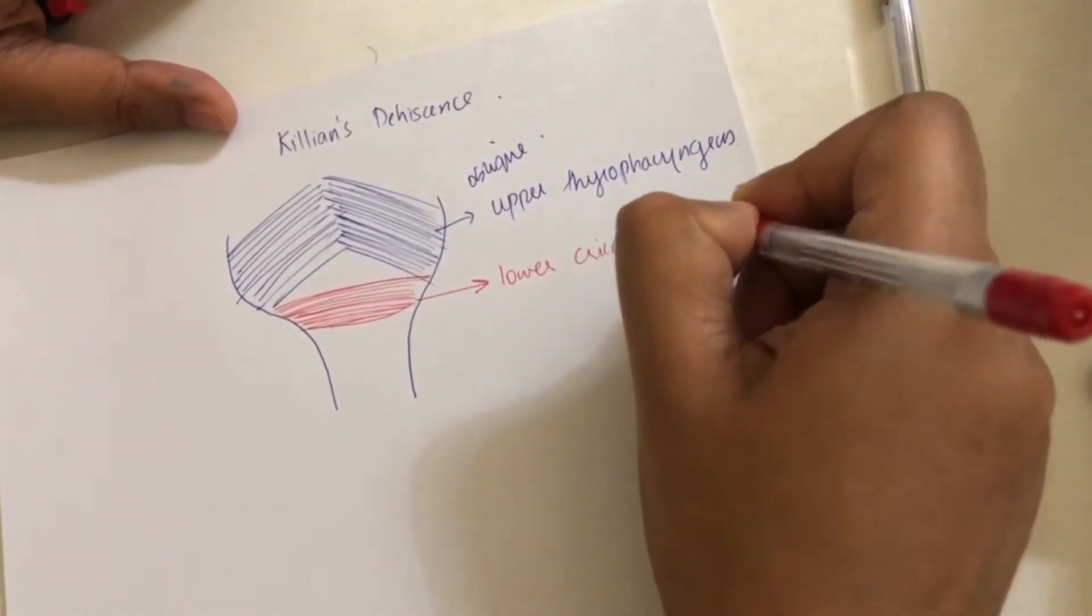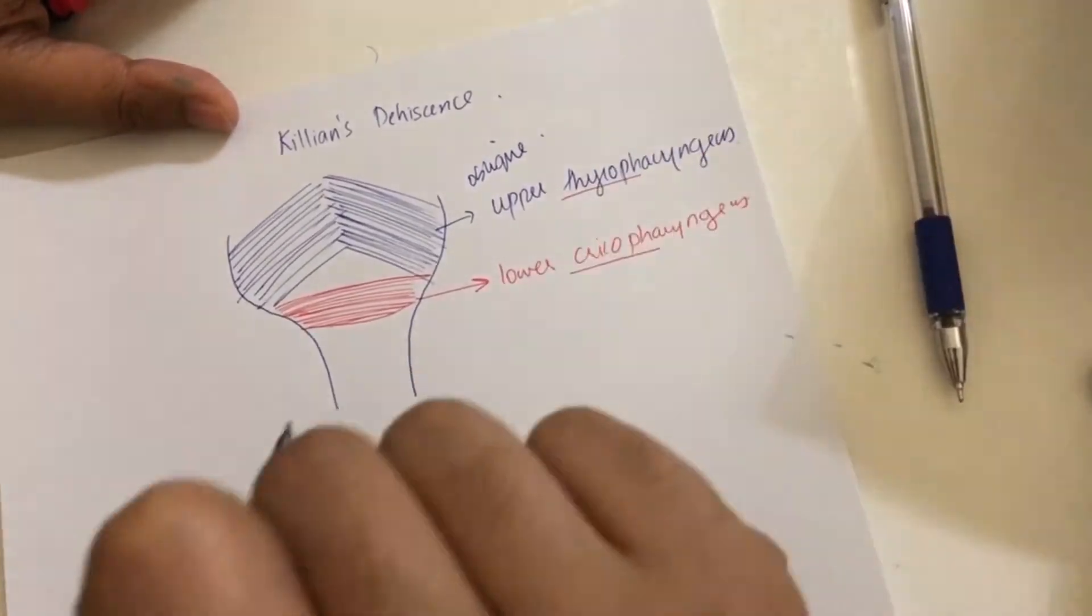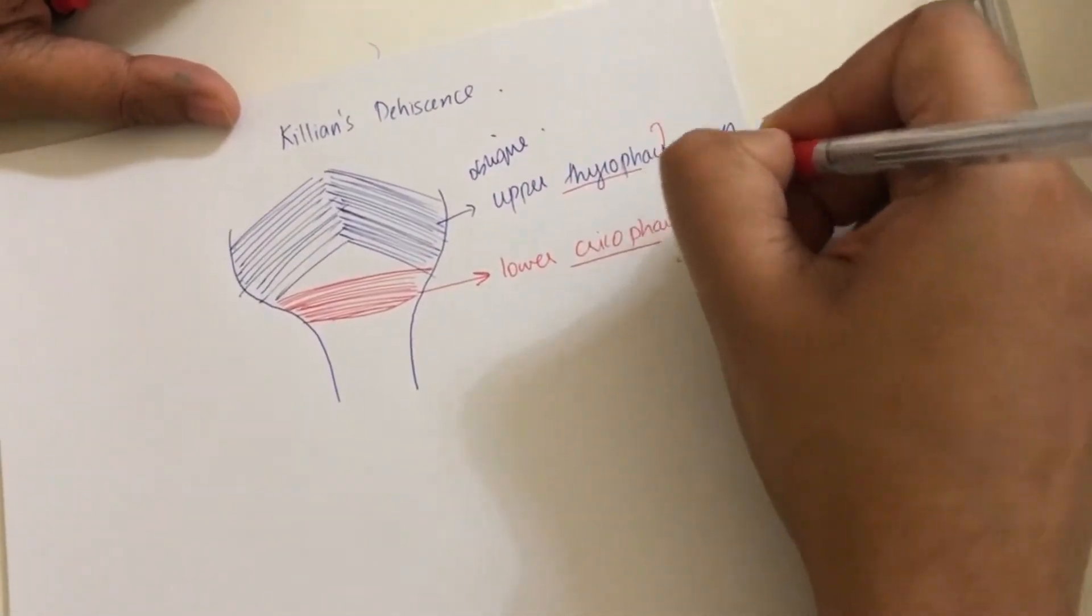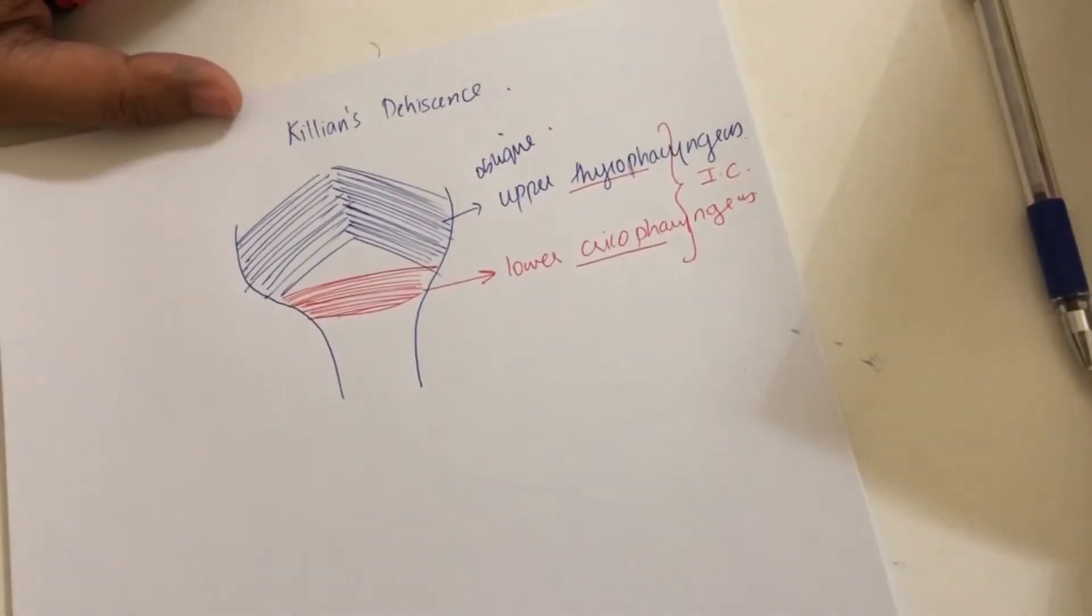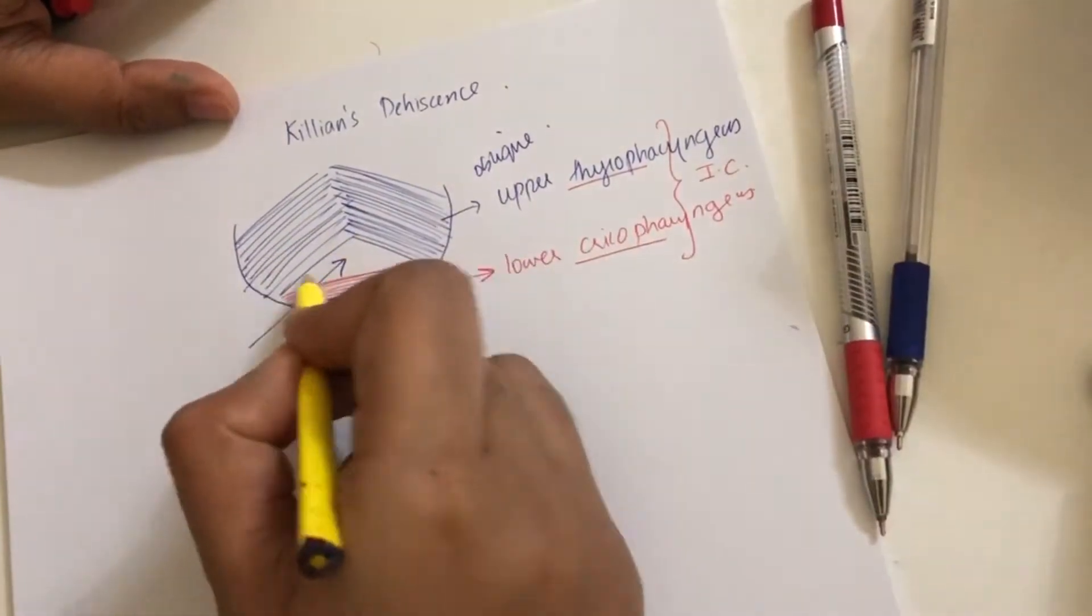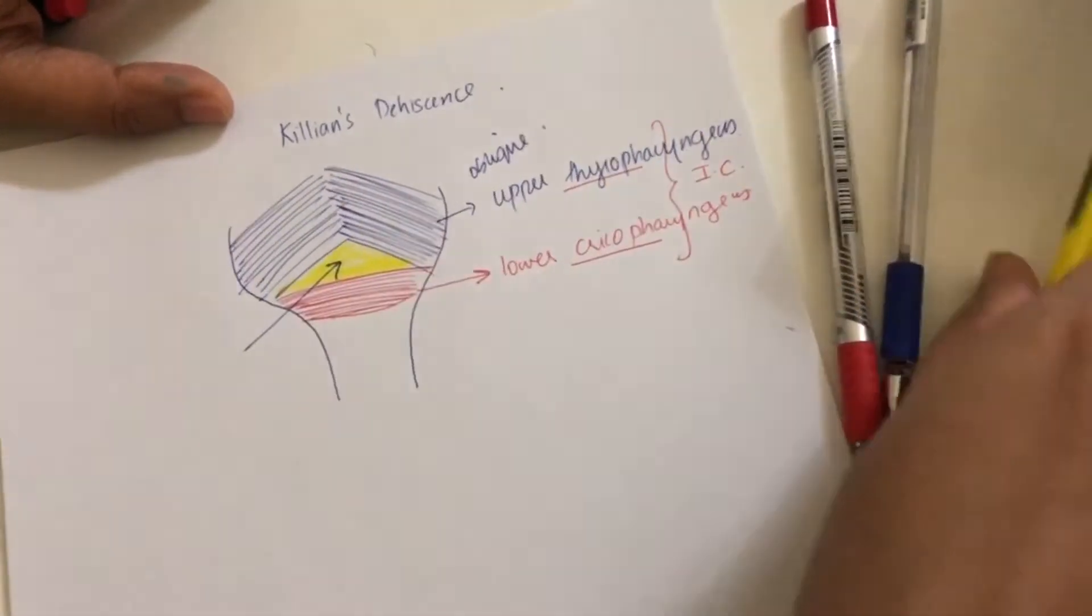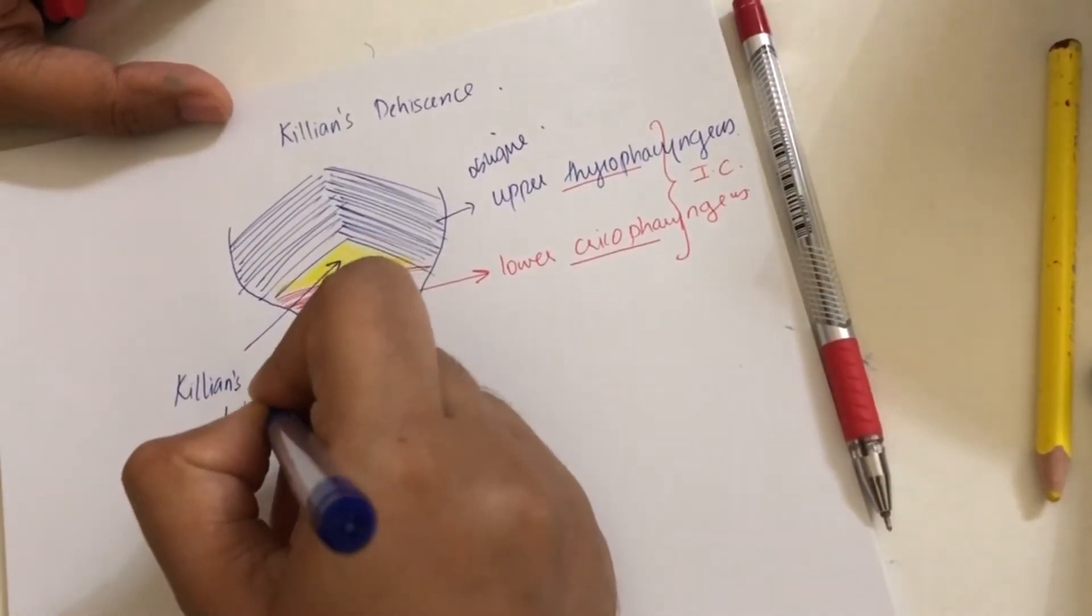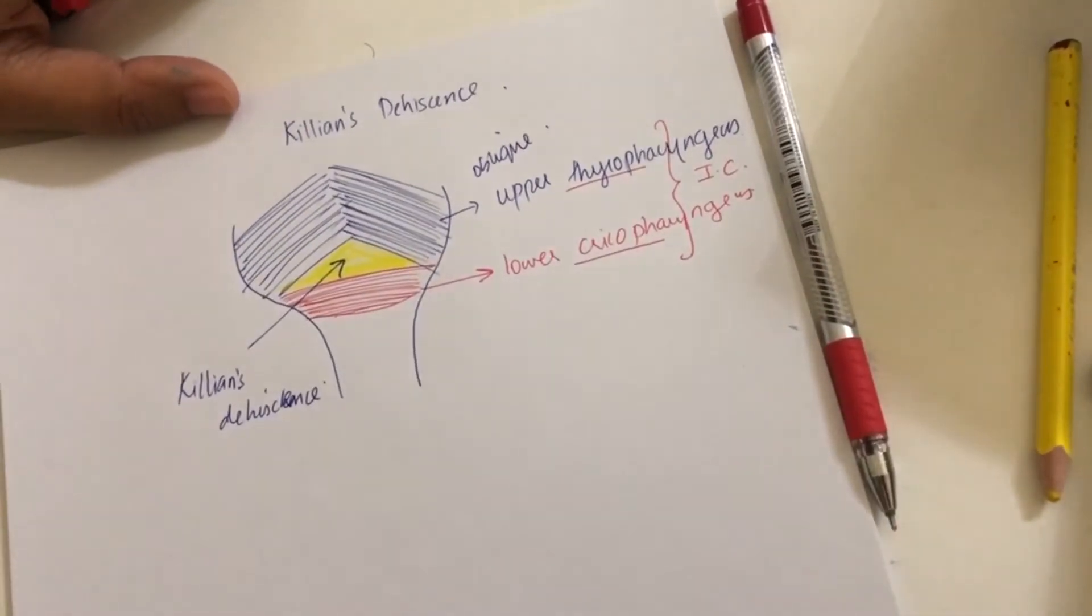Above we have the thyroid and down you have the cricoid. These two muscles are part of inferior constrictor muscles, and between these two muscles is a potential gap. That gap is called Killian's dehiscence. This is a site of weakness.